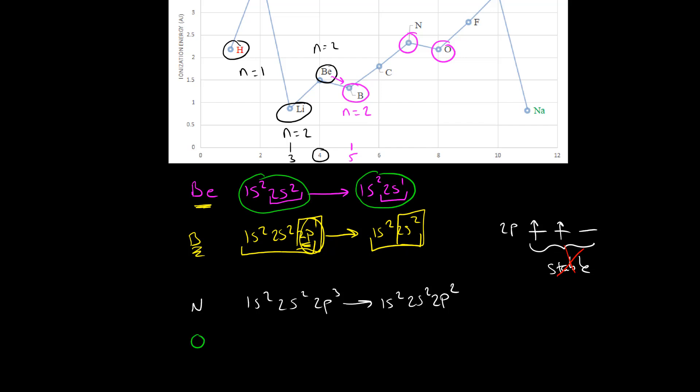With oxygen, we start at 1s2, 2s2, 2p4. So with oxygen here, our 2p, we have our three orbitals, we have 1 electron, 2, 3, 4. When we remove an electron from this, we end up with 1s2, 2s2, 2p3. So with oxygen, we've actually created a stable situation once we remove one electron.